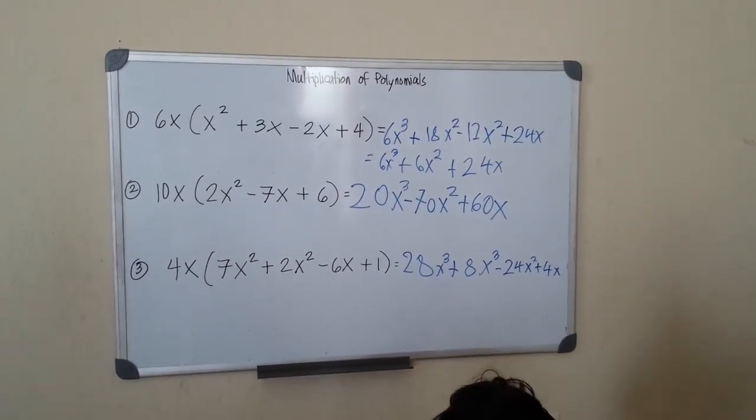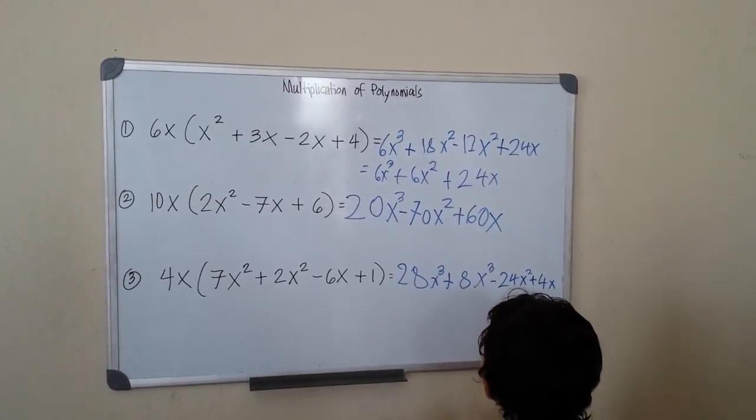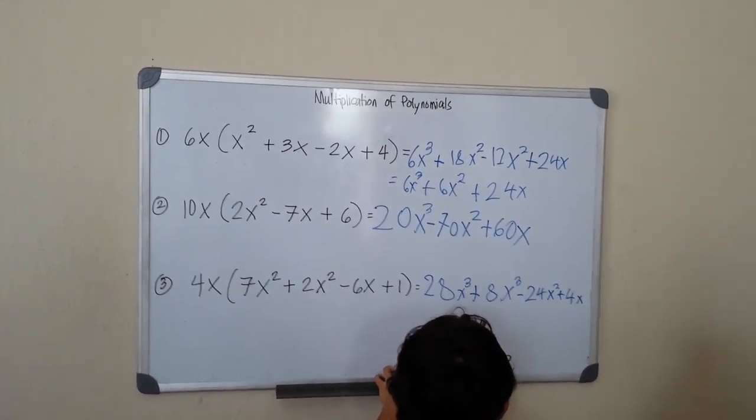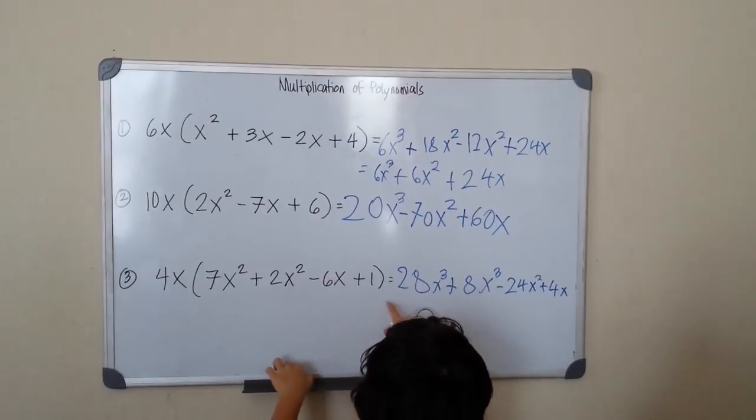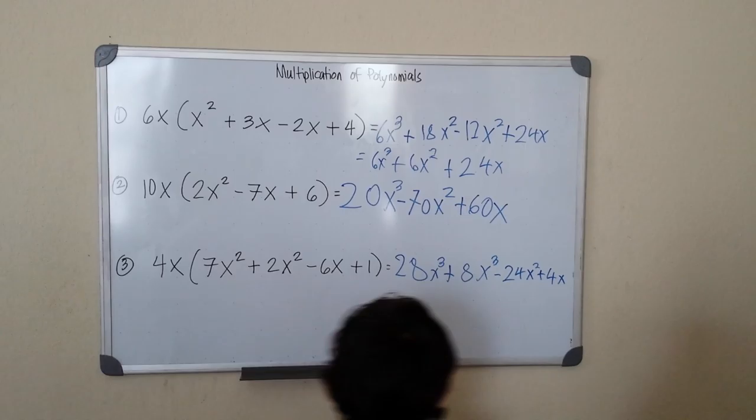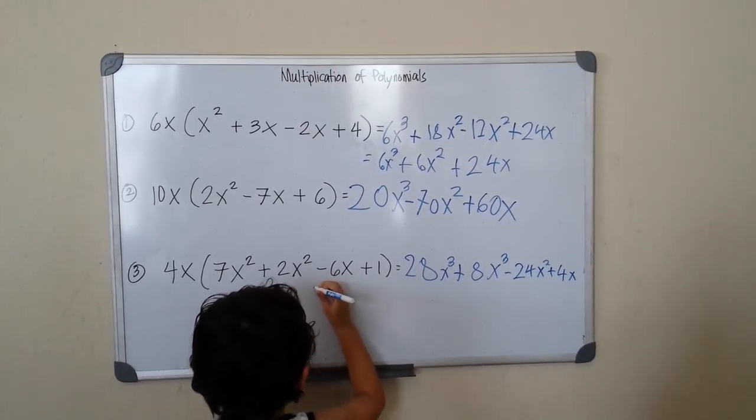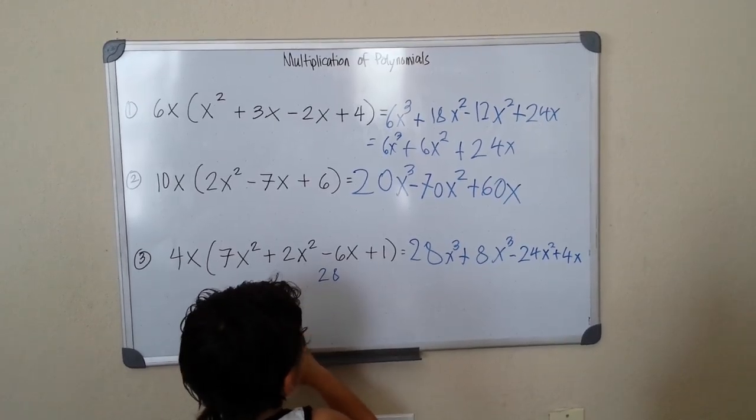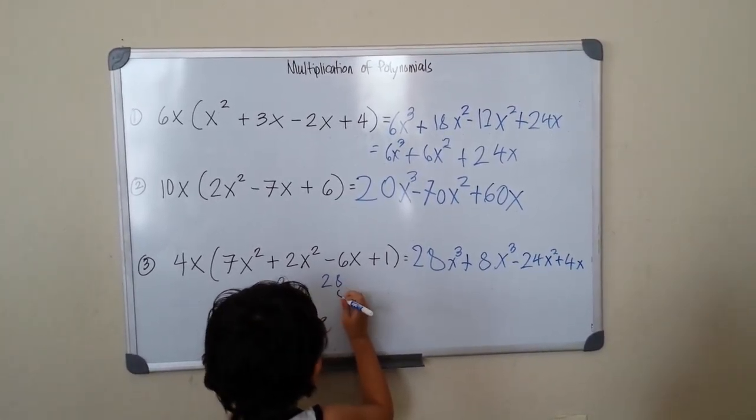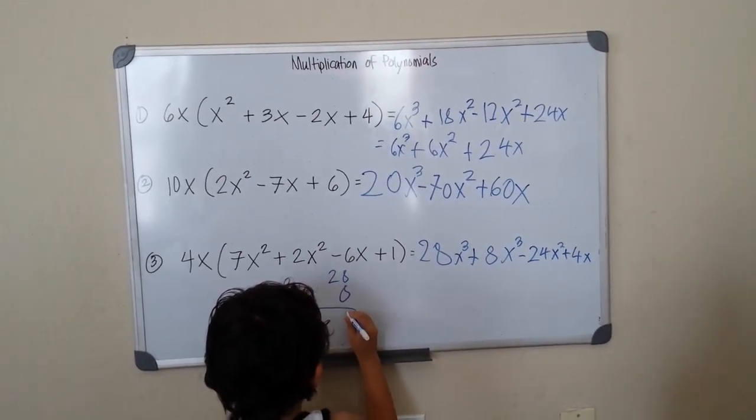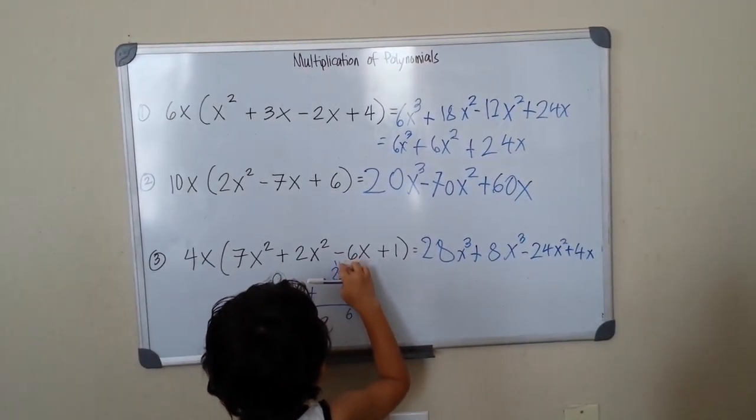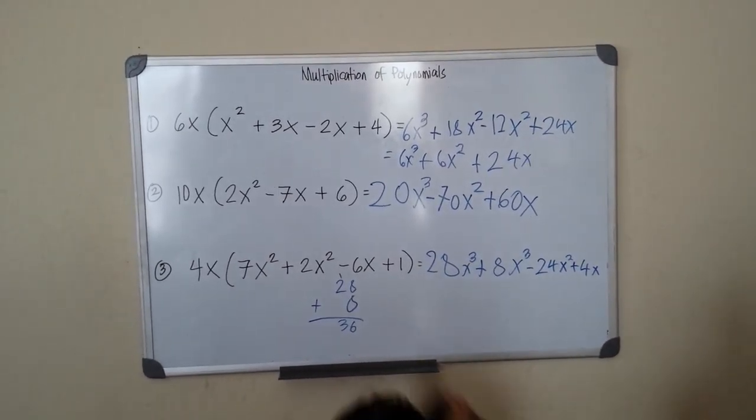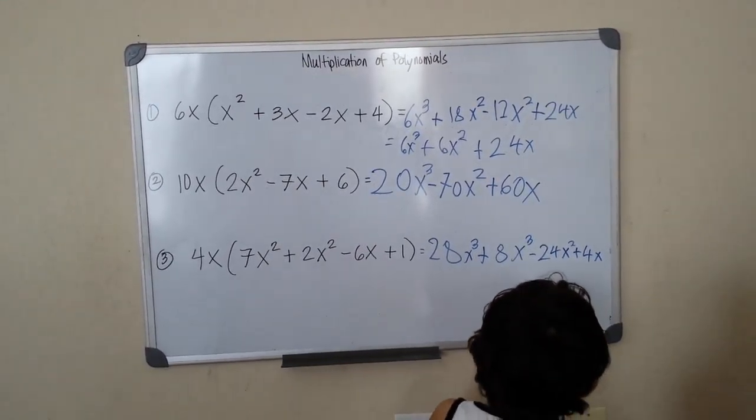Let's see if we can combine these. Let's see what's 28 plus 8. So 28x, 28 plus 8 equals, 8 plus 8 is 16. 1 plus 2 is 36. 28 plus 8 is 36.